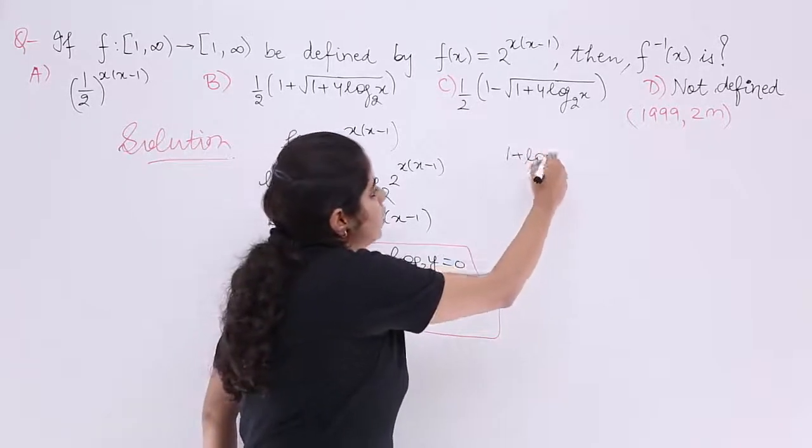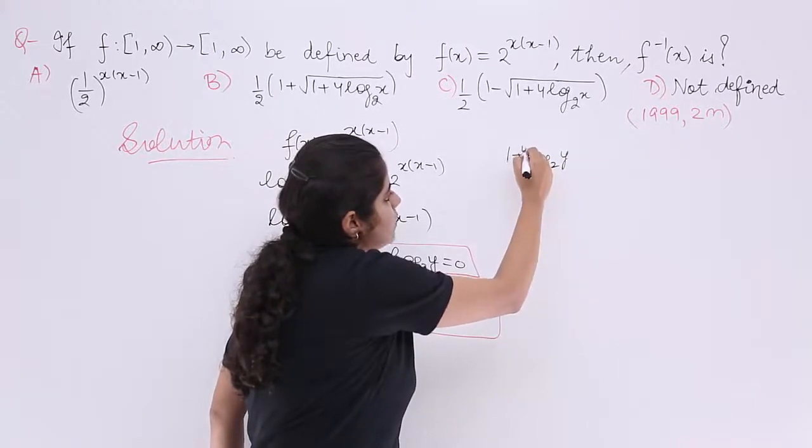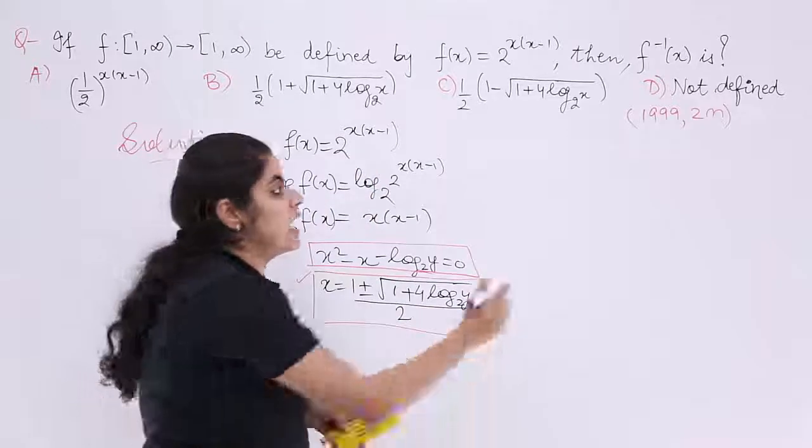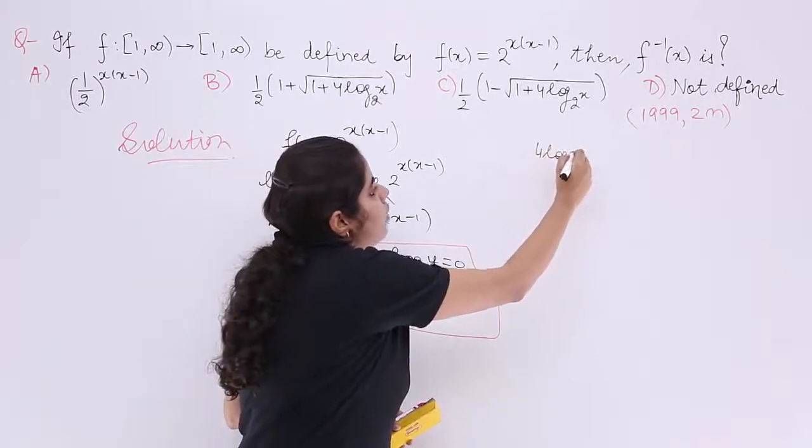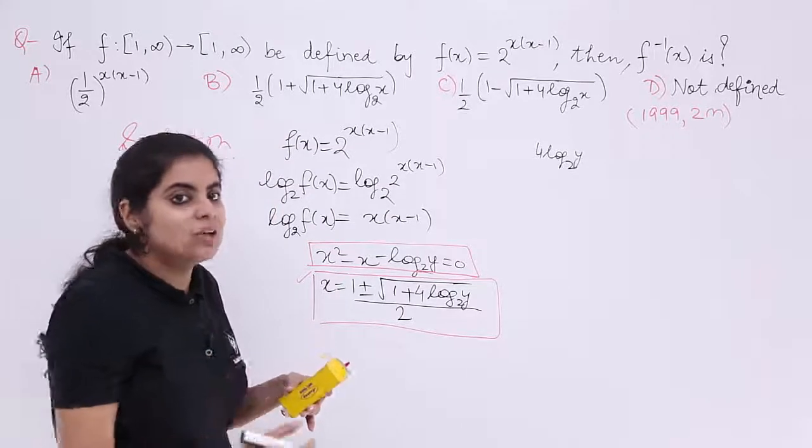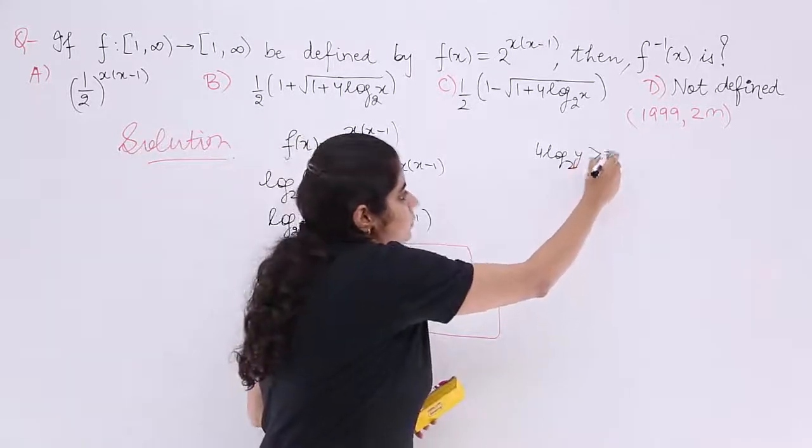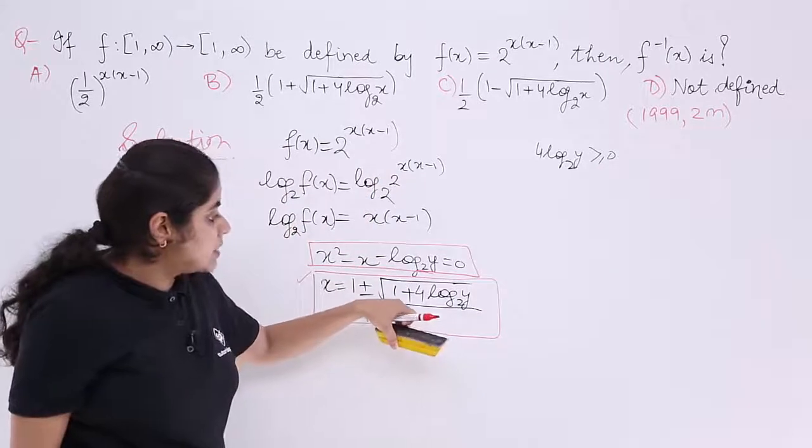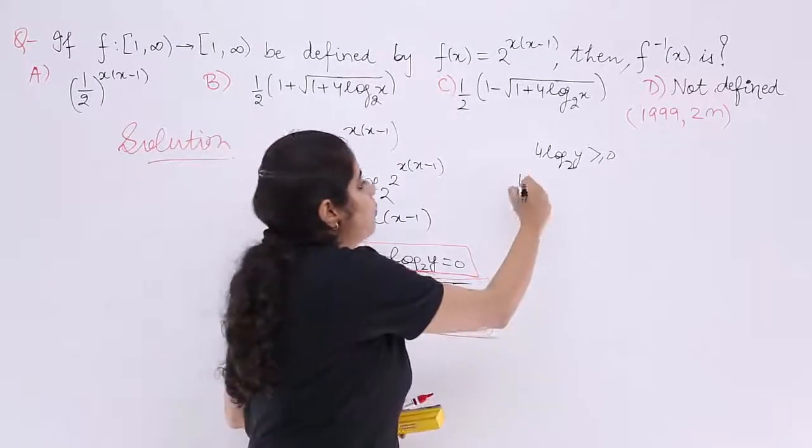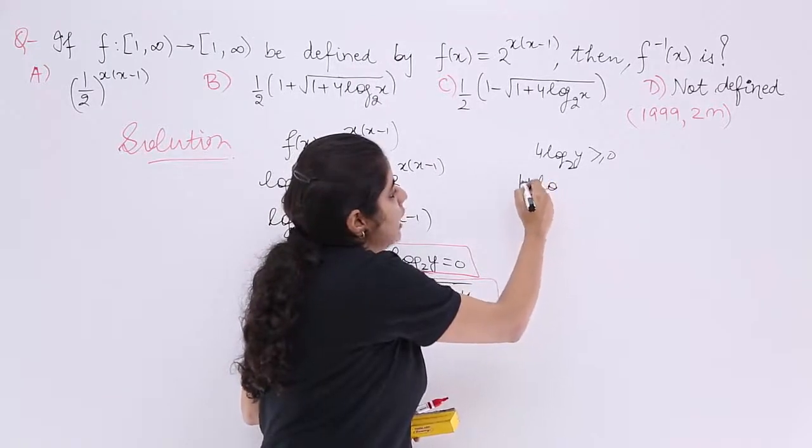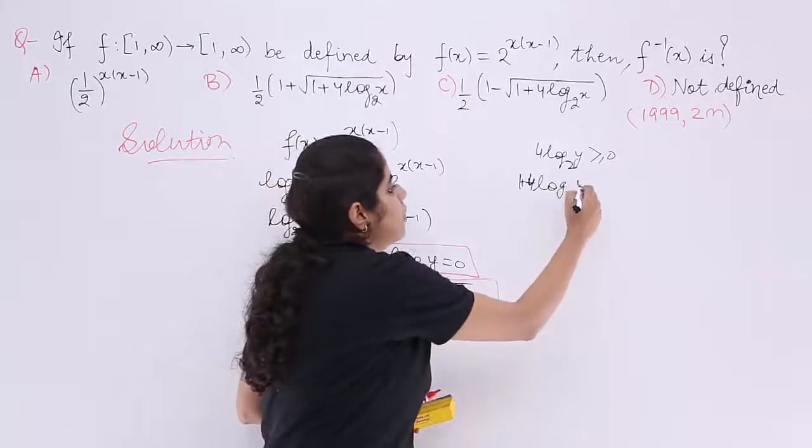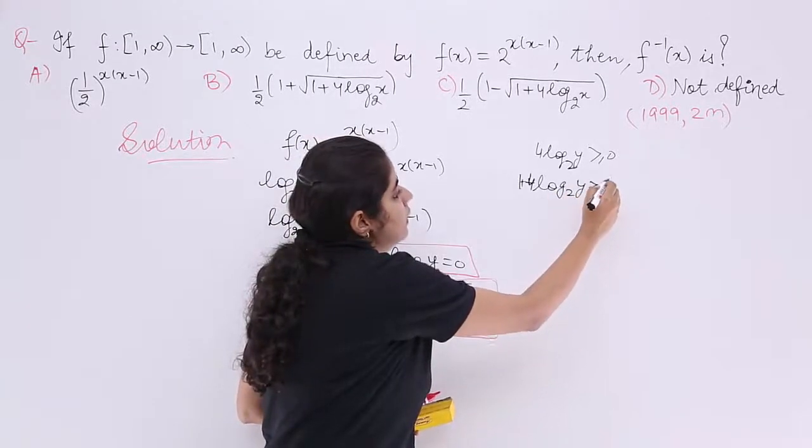Let's write it more beautifully. I have 4 log y to the base 2 with the minimum value. So it is greater than or equal to 0. But I have something else also in the root. What is it? It is 1. So 1 plus 4 log y to the base 2 is greater than equal to 1. Adding 1 to the both sides.